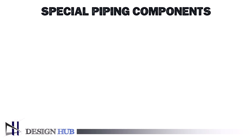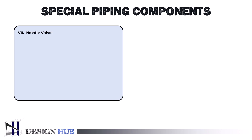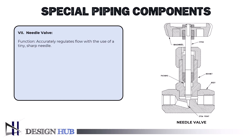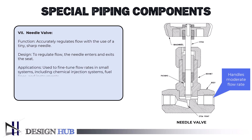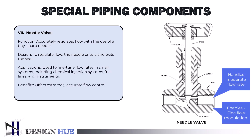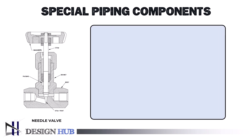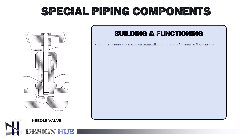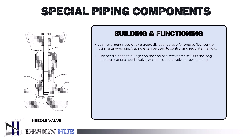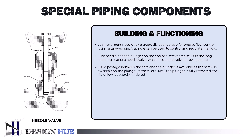The next valve we will learn about is the needle valve. A needle valve is a particular kind of valve that has a threaded plunger shaped like a needle with a tiny opening. Even though it can only handle relatively moderate flow rates, it enables fine flow modulation. An instrument needle valve gradually opens a gap for precise flow control using a tapered pin. A spindle can be used to control and regulate the flow. The needle-shaped plunger on the end of a screw precisely fits the long, tapering seat of a needle valve, which has a relatively narrow opening. Fluid passage is available as the screw is twisted and the plunger retracts, but the fluid flow is severely hindered until the plunger is fully retracted.